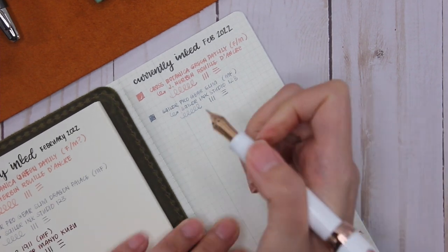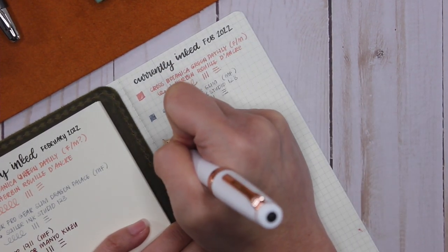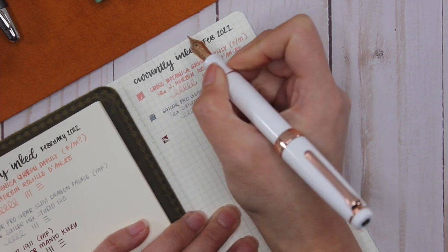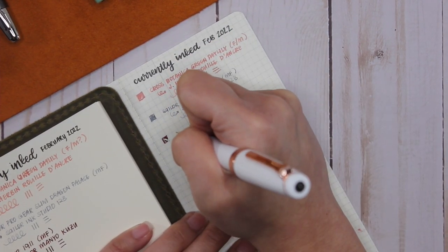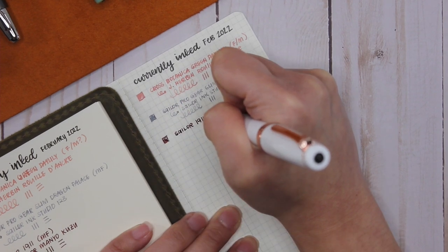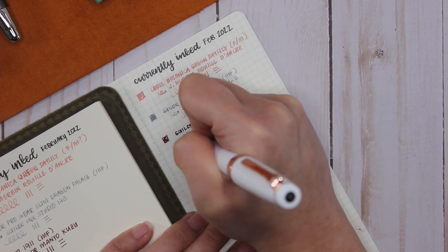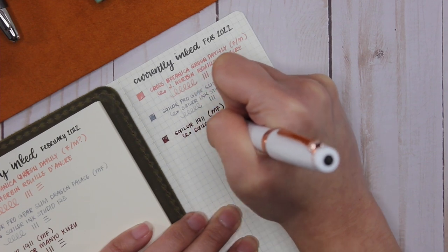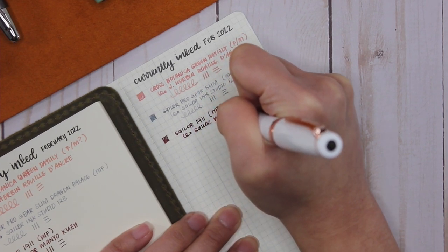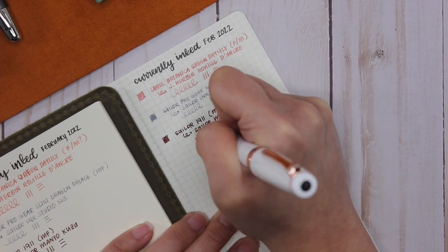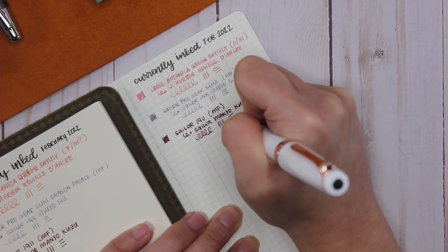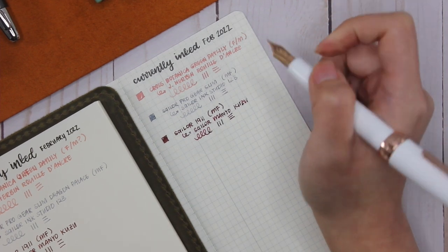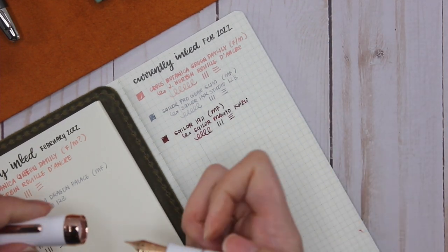And then trying it on the Hobonichi paper—like you notice just a difference in the flow just from the different papers. The ink seems to come out more wet on the Hobonichi paper, and I just love the shading that you get with this. You can go from the really light to the really dark, and it's like burgundy purple and you don't know which way it's going to go, but I love the way that it looks.